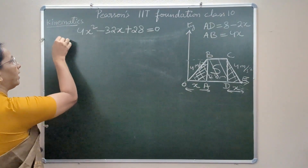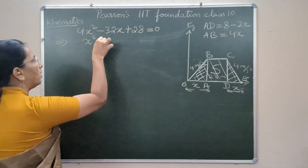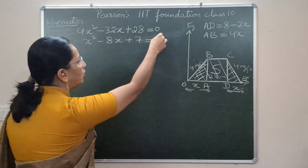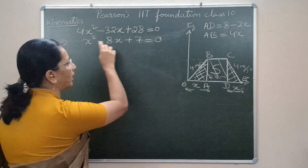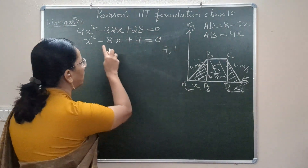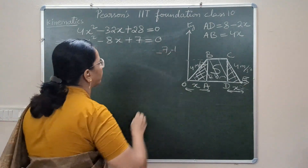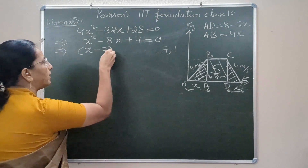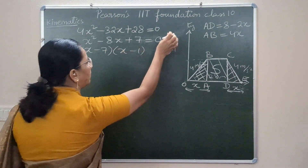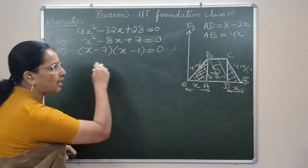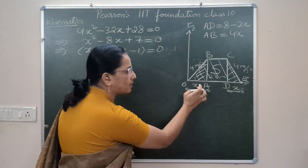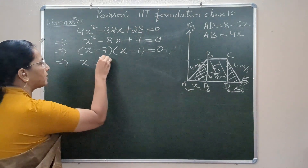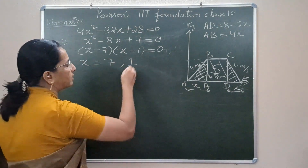Solving the quadratic X² minus 8X + 7 = 0 by splitting the middle term: the factors of 7 that give minus 8 are minus 7 and minus 1. So the factored form is (X minus 7)(X minus 1) = 0, giving X = 7 seconds or X = 1 second. Since X represents time, one of these values must be rejected.